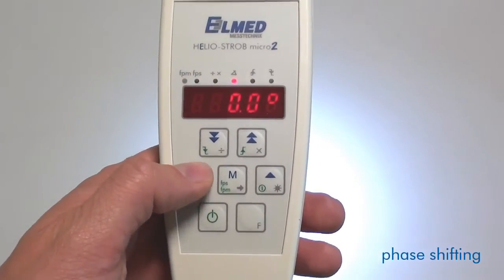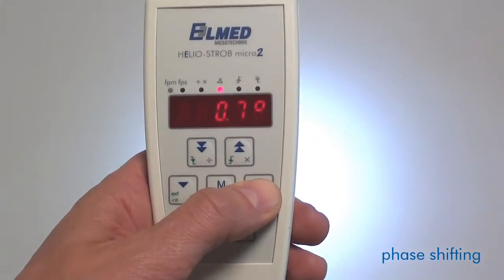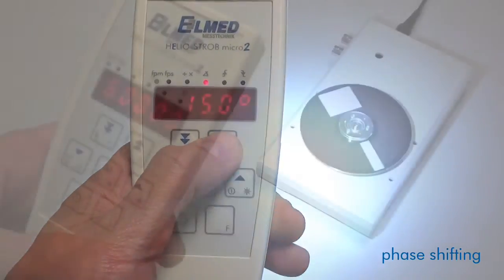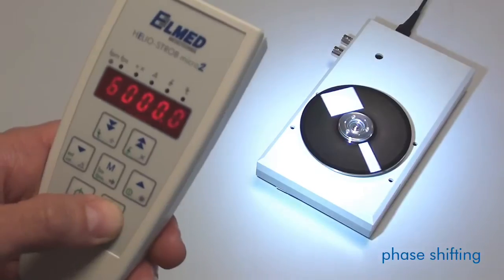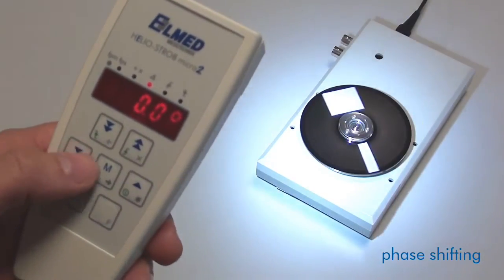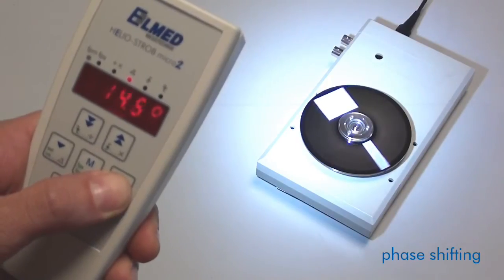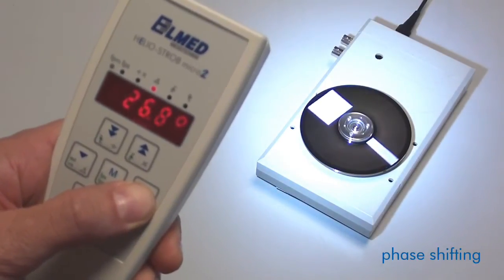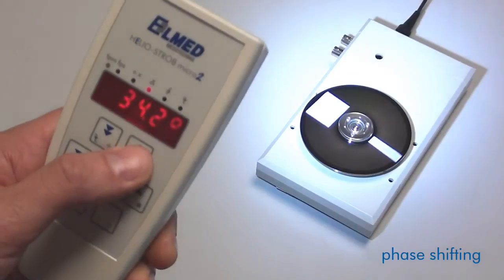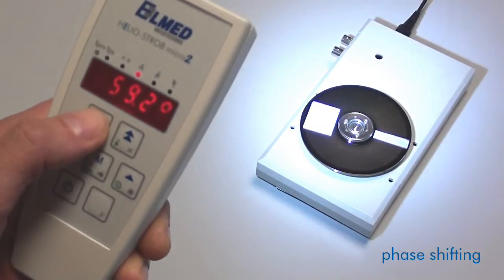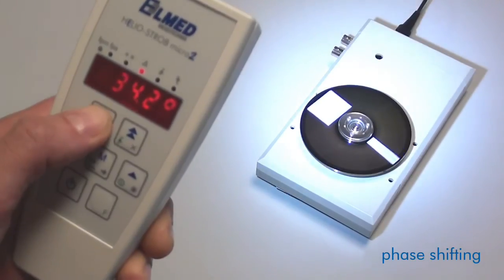You want to observe a certain motion sequence or position? An easy task with a handy phase shift function. You can activate it by pressing the function key F and the COMMAND key with the angle symbol. By means of the blue arrow keys, you can choose the desired position of the motion cycle within the range of 0 degrees and 360 degrees. The position of the object adjusts to the selected value.